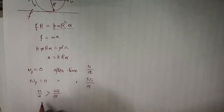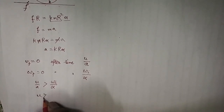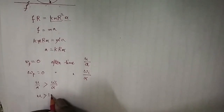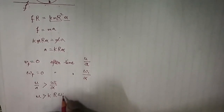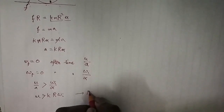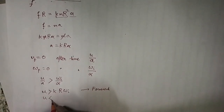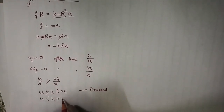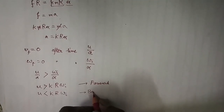Now I have a solution and an explanation too. We get u greater than k·r·ω_initial, which gives us a forward direction. And u less than k·r·ω_initial gives us a backward direction.